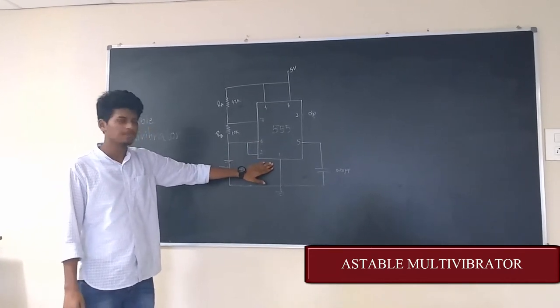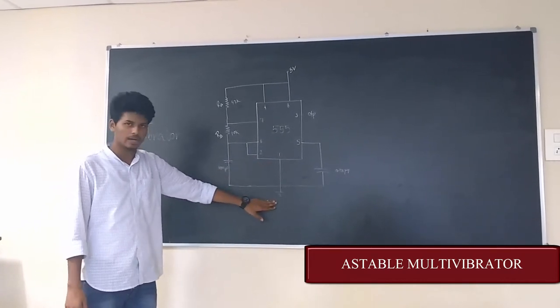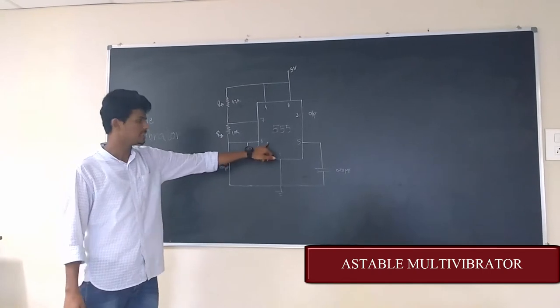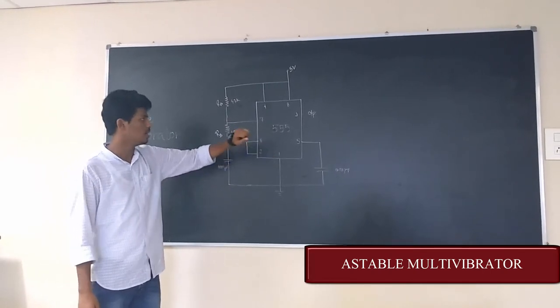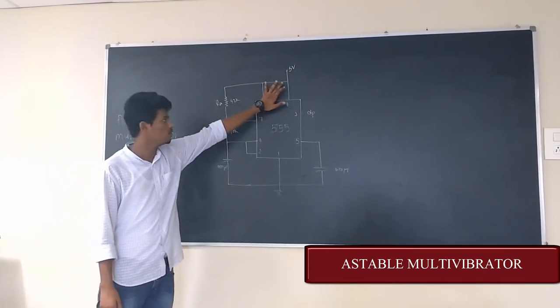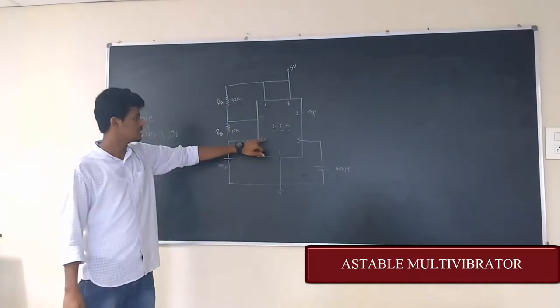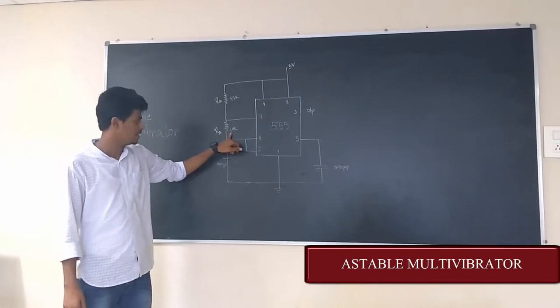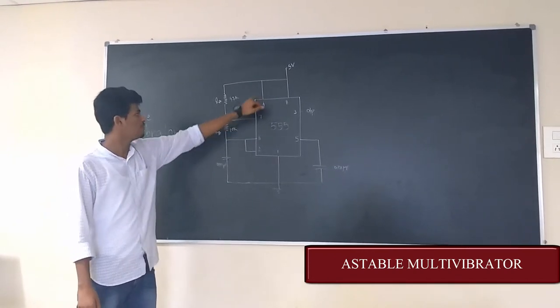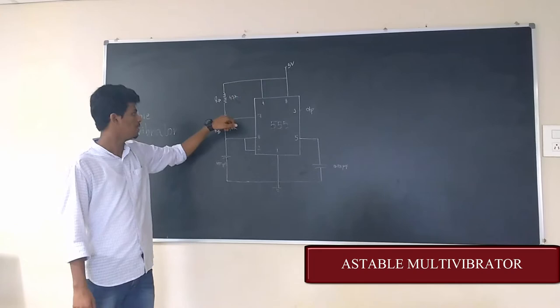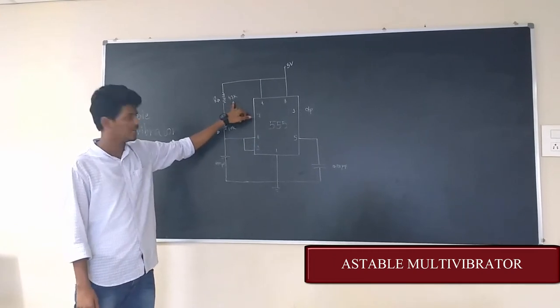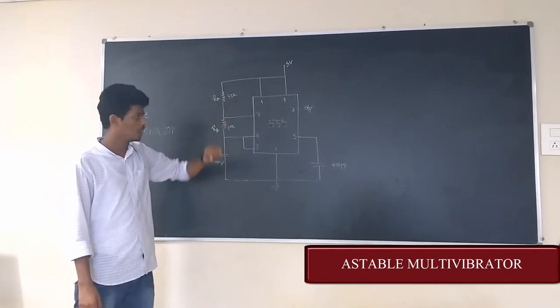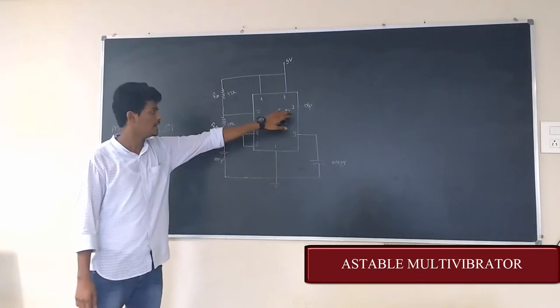The first pin of timer IC is connected to ground. The second pin and the sixth pin are shorted to each other. A voltage supply of 5 volts is given to the 4th and 8th pin. The 6th pin and 7th pin are connected to each other with the resistance Rb, that is 10k. And the 7th pin is connected to Rb with resistance Ra, 4.7k. The output is measured at pin 3.